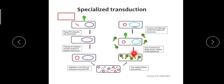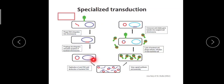Then the bacteriophage is released from the bacterial cell — lysis of the bacterial cell occurs and the newly formed bacteriophages are released to the outside. You can see that this bacteriophage now has a DNA content which is a combination of both the first bacterium and the bacteriophage — a red colored DNA which is of the bacteriophage, and a blue colored region which is a portion from the first bacterium.